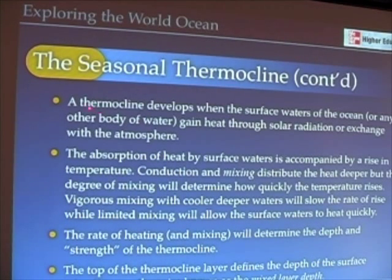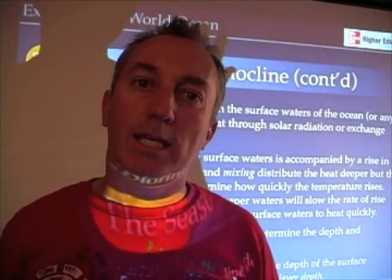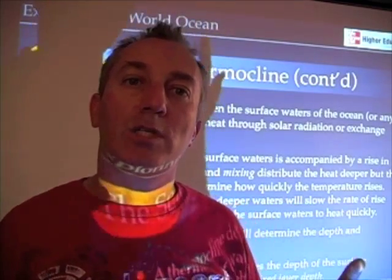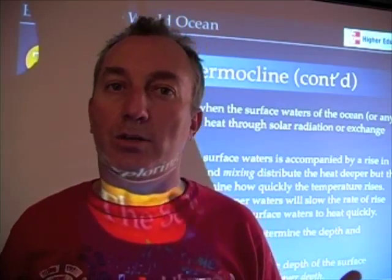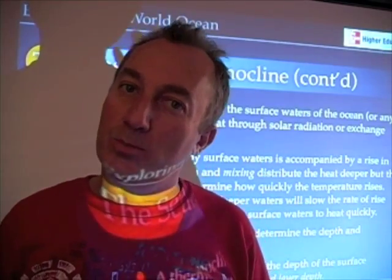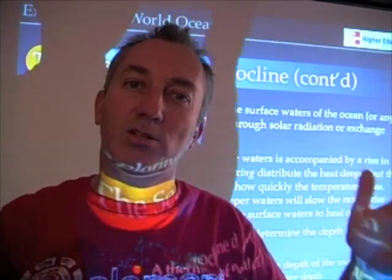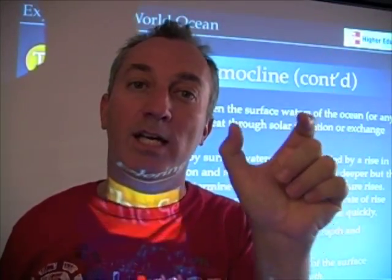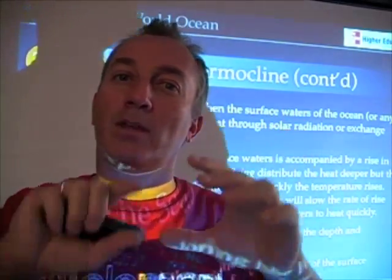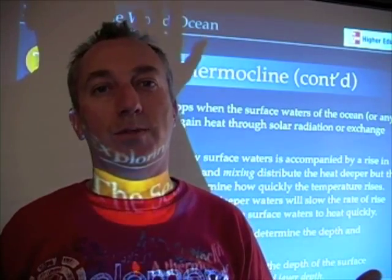The thermocline begins to develop as the ocean gains heat. When does the ocean gain heat? Thinking about our own experiences, it begins to warm up during the seasonal cycle in the springtime. As the sun angle rises, as days get longer, and as the intensity of solar radiation per unit area becomes more intense, the surface of the ocean begins to warm up and a thermocline forms.